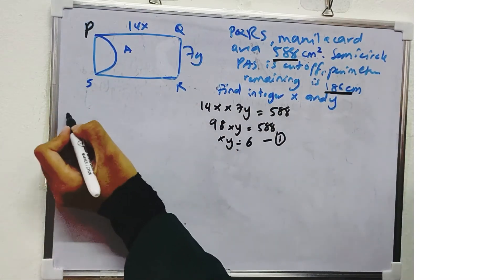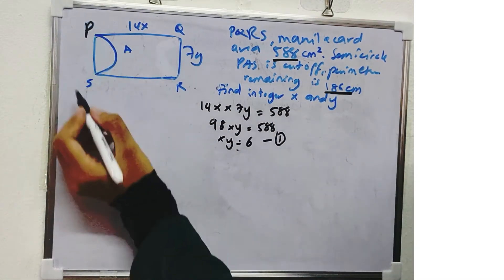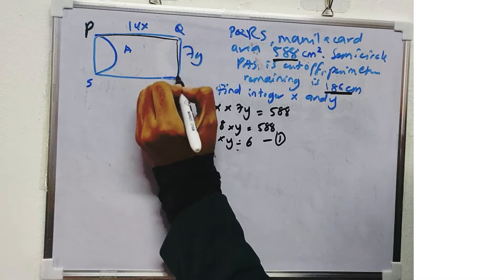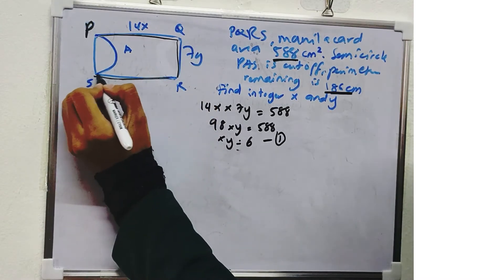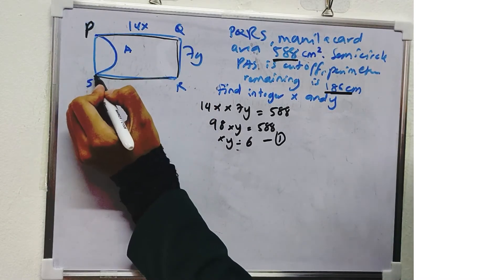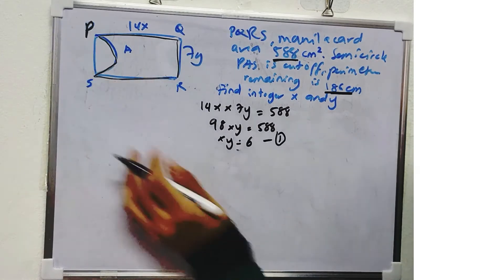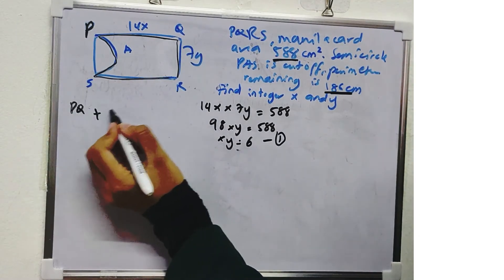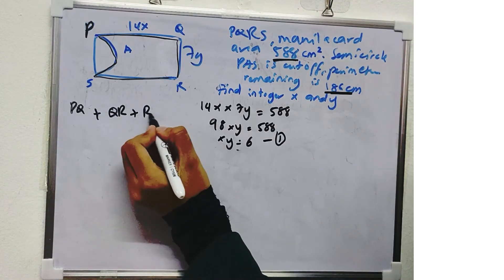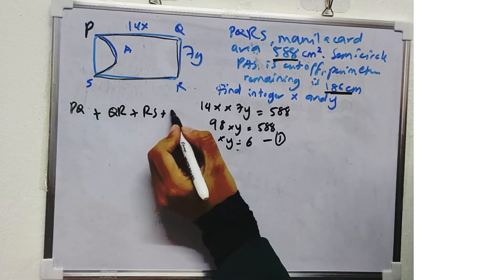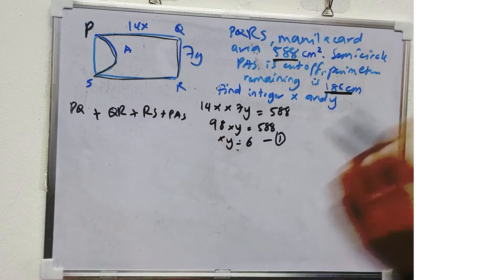semicircle is cut off. So perimeter is PQ plus QR plus RS and the half semicircle PAS. So PQ plus QR plus RS plus PAS. So how to get?